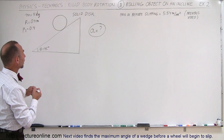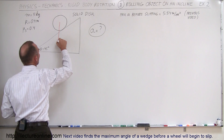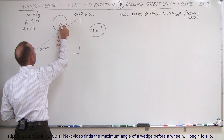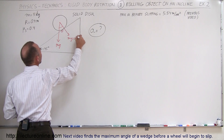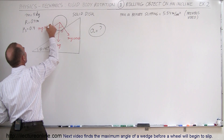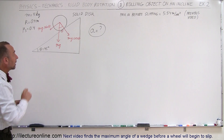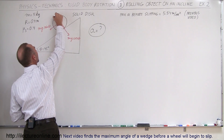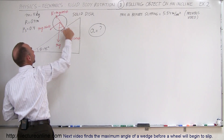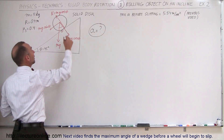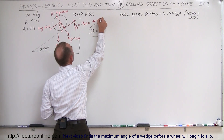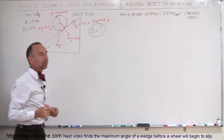Let's draw all the force vectors on this disc. We have the force of gravity pulling straight down, that's mg. The perpendicular component to the incline is mg cosine θ, and the parallel component of the weight is mg sine θ — that's the force pulling the disc down the incline. We also have the normal force pushing back, equal to mg cosine θ (Newton's third law), and a friction force directed up the incline equal to the normal force times μ, which gives mg cosine θ times μ.